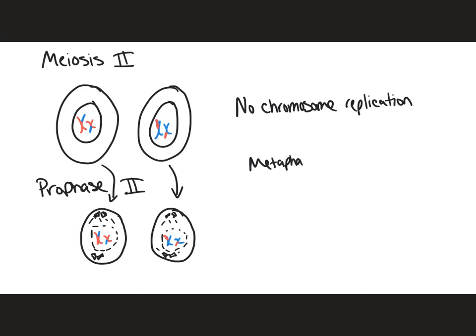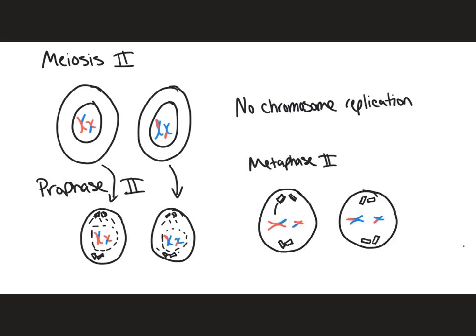In metaphase two, the sister chromatids are going to arrange themselves at the metaphase plate. This is a little different from what we saw in metaphase one — in metaphase one we had pairs of homologous chromosomes lining up, whereas here we have the sister chromatids lining up at the metaphase plate. These can face in either direction as long as the sisters are facing opposite poles.